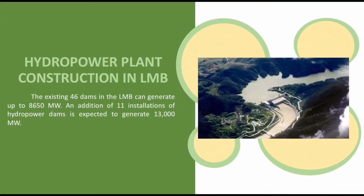In addition to that, 11 installations of hydropower dams among 123 proposals are expected to be built. However, the intention of many hydropower companies in utilizing the river basin to generate renewable energy brings threats and negative impacts to the river's rich biodiversity, costing the livelihood of at least 60 million people relying on the river's resources, particularly in Cambodia and Vietnam.